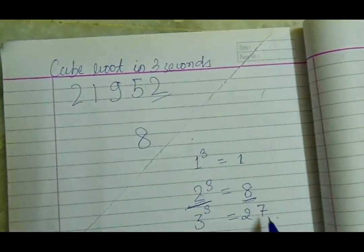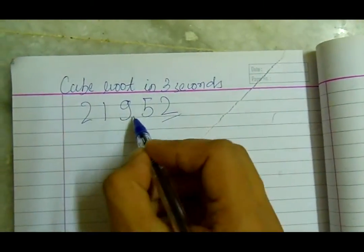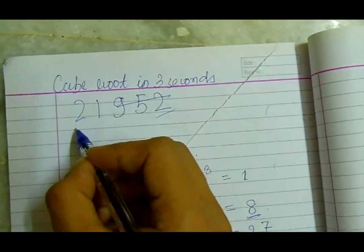You see 2, write 8. Cross the 3 digits, there is 21.